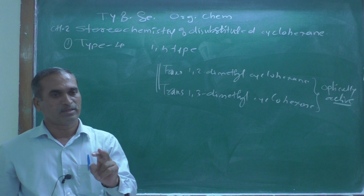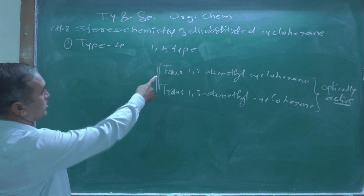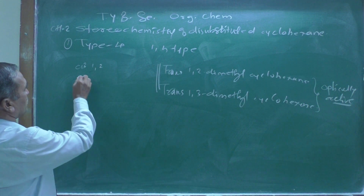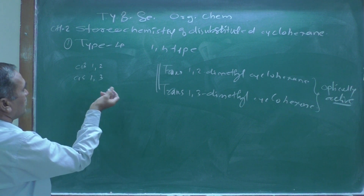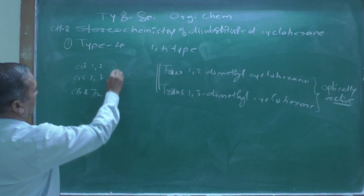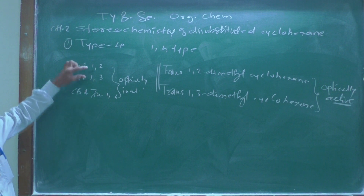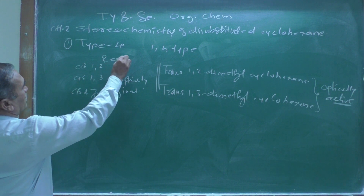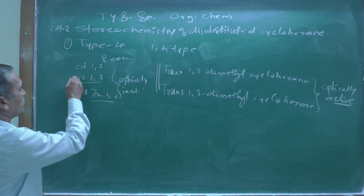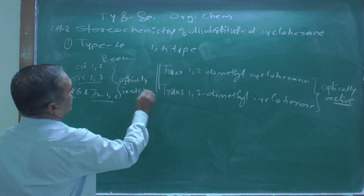So to summarize: 1,1 is optically inactive; cis-1,2 is optically inactive; cis-1,3 is optically inactive; and both cis and trans 1,4 are optically inactive. This is because cis-1,3 is a racemic mixture, while cis-1,2 and both 1,4 types are meso compounds — and that is why they are optically inactive.